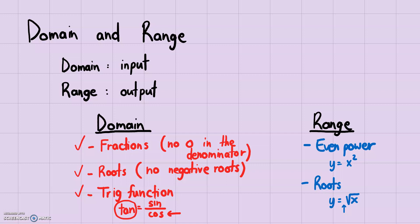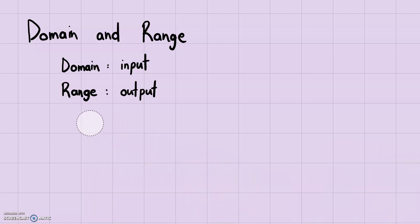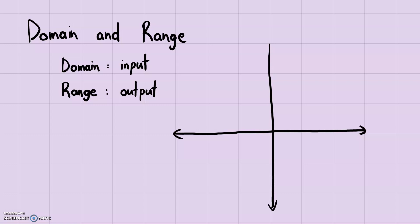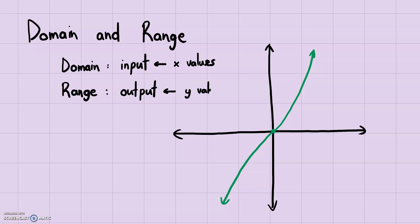Now, how can you understand domain and range graphically? The checklist I just described was for algebraic analysis. But graphically, you can also deduce domain and range from a graph on a coordinate plane. Graphically, the domain is the input — basically the x values — and the range is the output, the y values. For domain, look at the x axis and ask: are there any x values this graph can't reach?